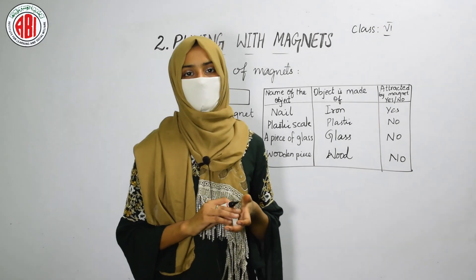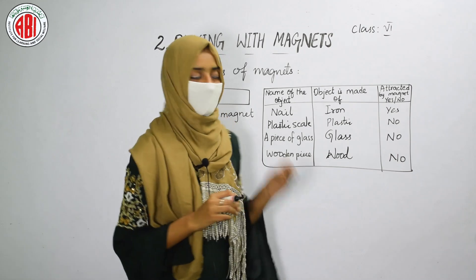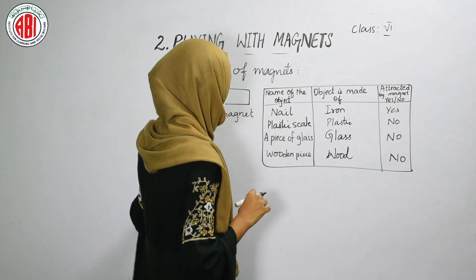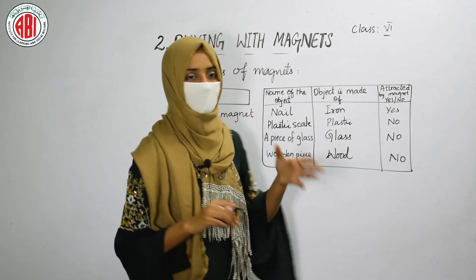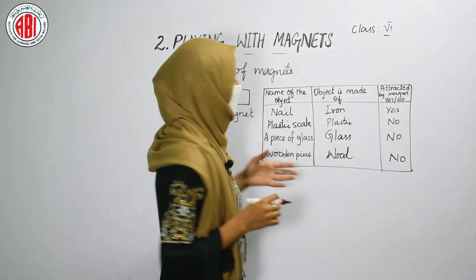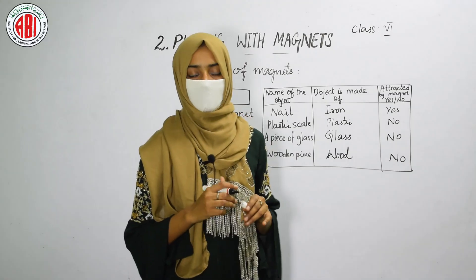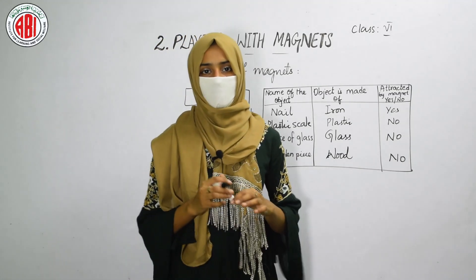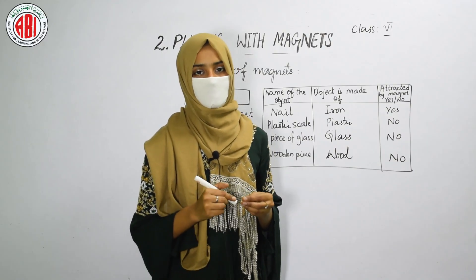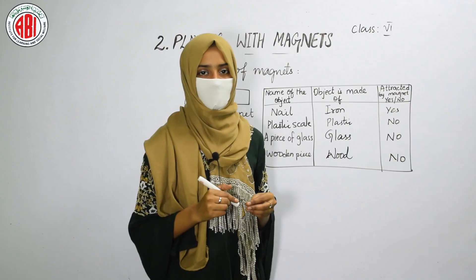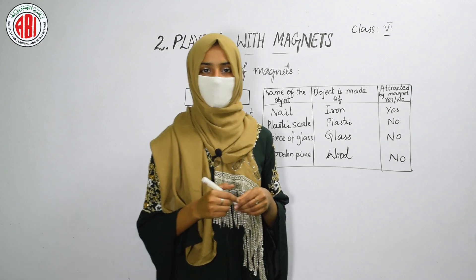Whatever materials are made up of iron, steel, or copper and cobalt can get attracted by the magnet. Other materials like plastic scale, a piece of glass, and wooden piece — which are made up of plastic, glass, and wood — are not attracted by the magnet. In this way, certain objects that can be attracted by the magnet are called magnetic substances, and those that cannot are called non-magnetic substances or non-magnetic materials.